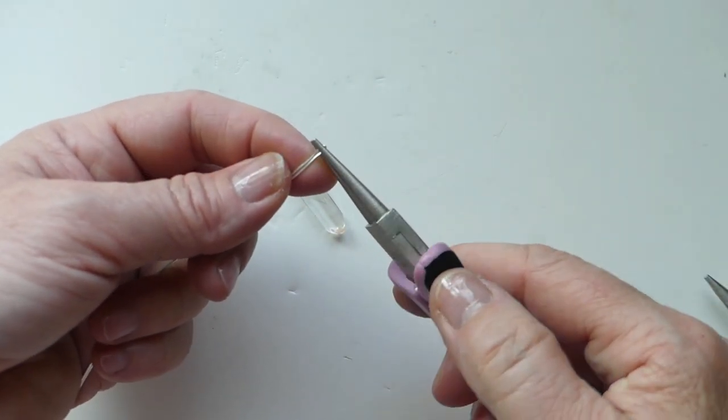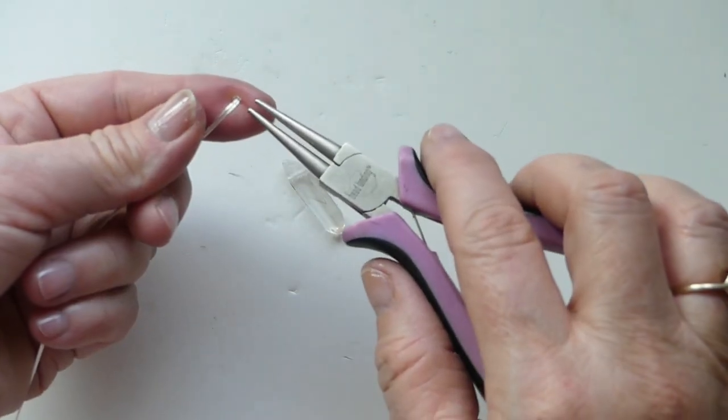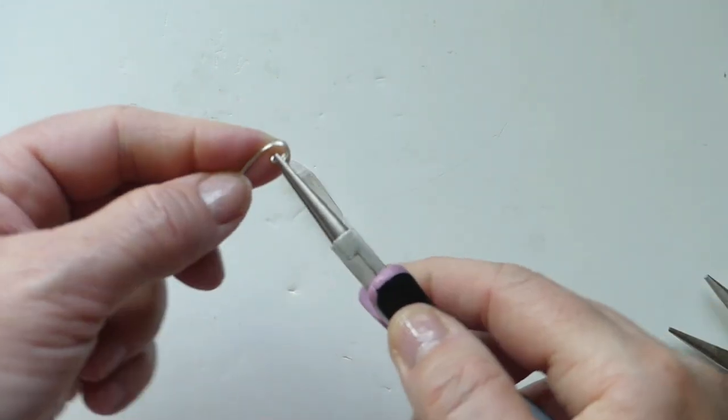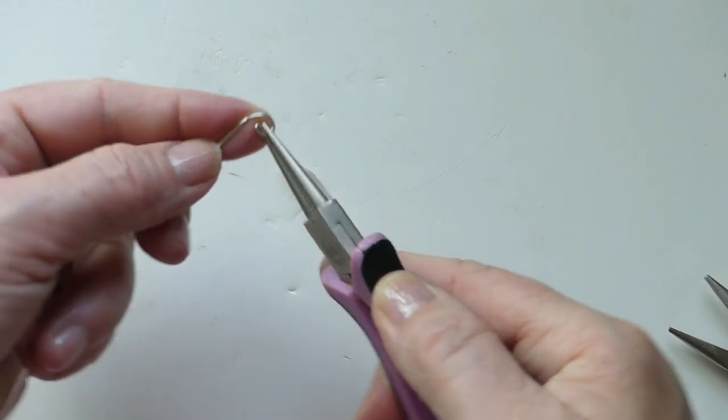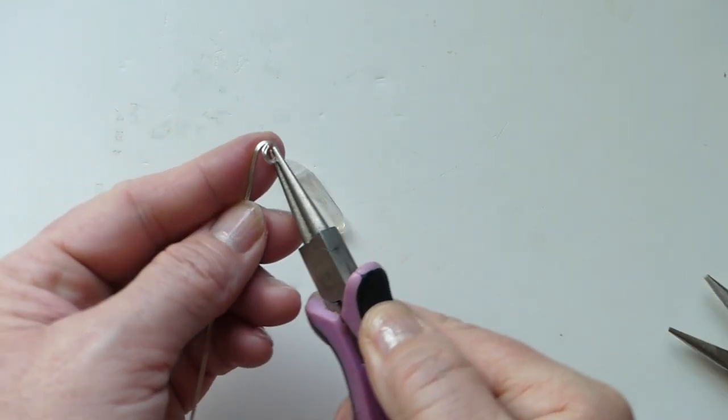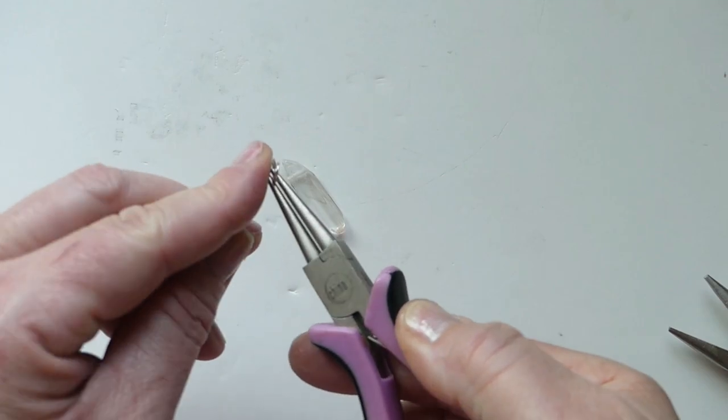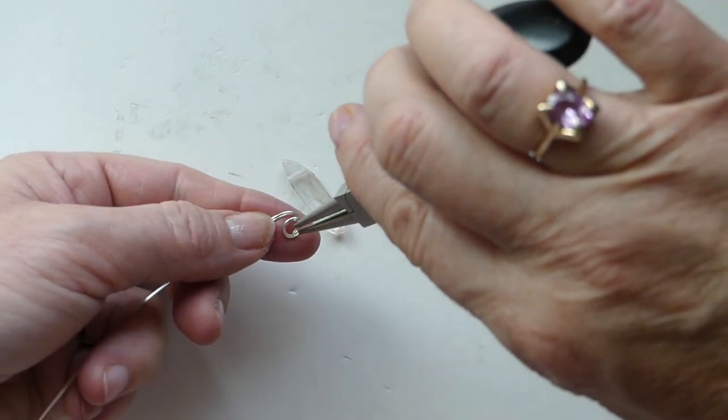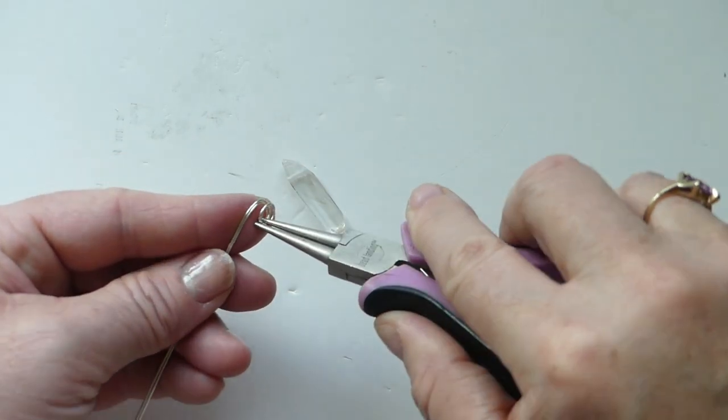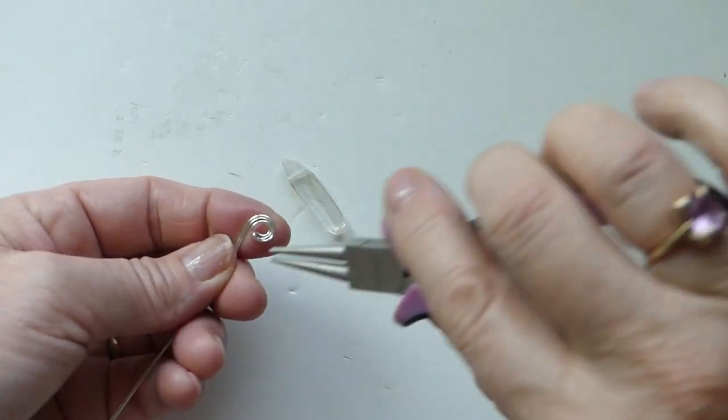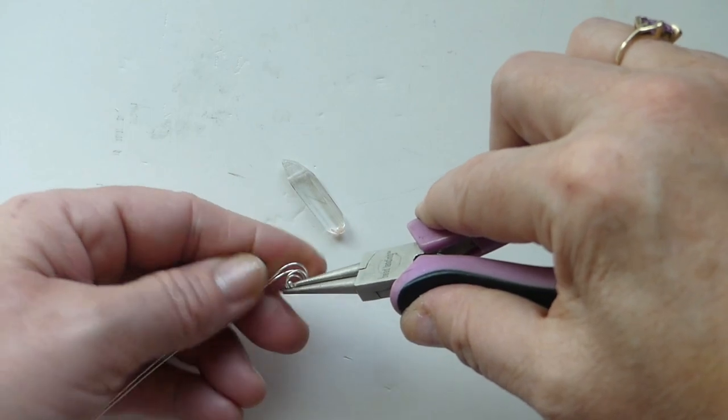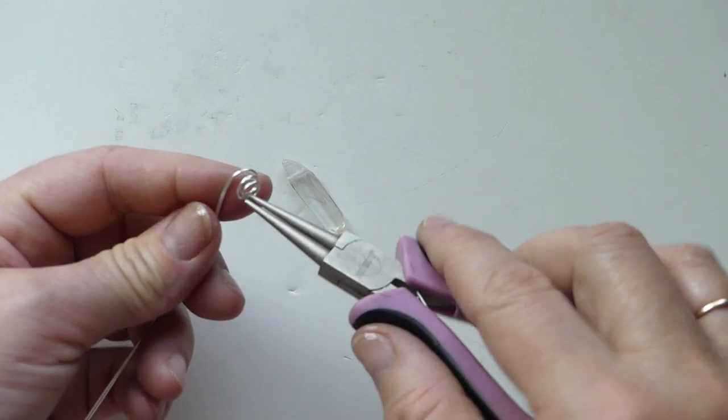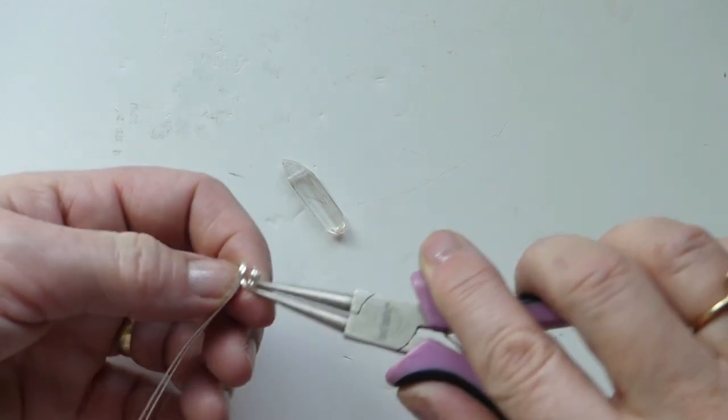Now we take our round nose pliers and we just start to curl this a little bit. So we're making a coil is what we're doing. And our crystal is going to sit in this coil at the bottom. So you probably have to adjust it a fair bit once you actually have your crystal set into that.